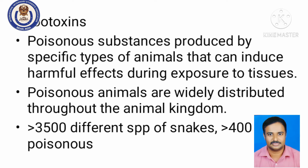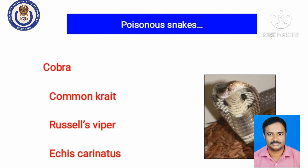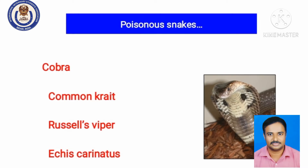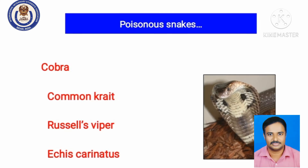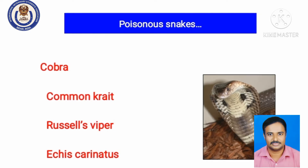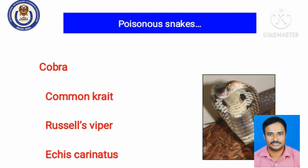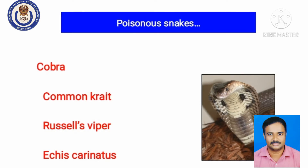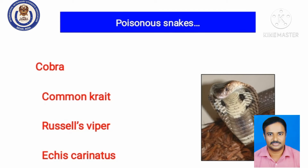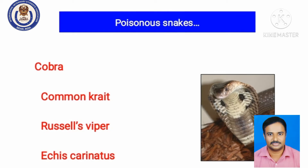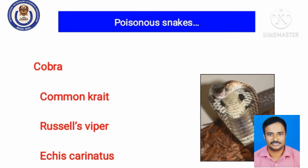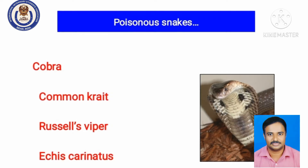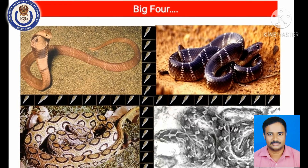There are more than 3,500 different types of snakes, and among these more than 400 are very poisonous. For snake poisoning specifically, there are four types of snakes called the 'big four' — all highly poisonous. The first is the cobra, Naja naja; then the common krait; Russell's viper; and Echis carinatus. If the animal is not treated correctly or soon after the bite, death is the end result.